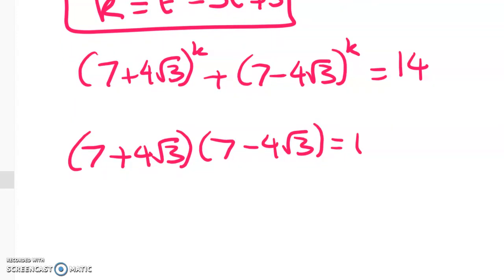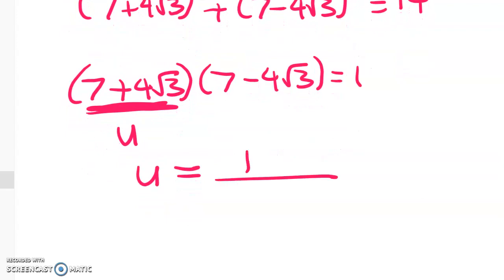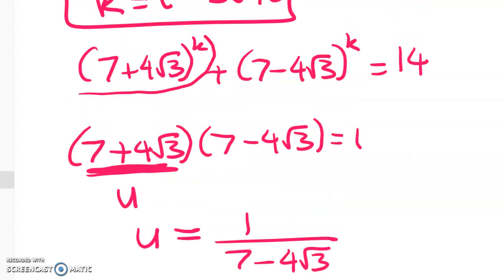So let's now call this something. I call this u. So I've got u is equal to 7 plus 4 root 3 to the power of k, or u is equal to 1 over 7 minus 4 root 3. Let's go back to where we got to with that equation. I want to do something with the surds. I've still got two different ones but we can replace this one here with u.